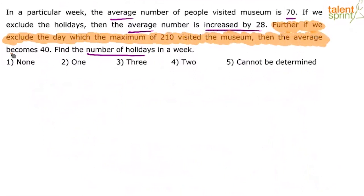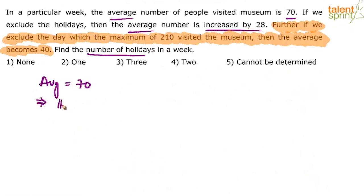There will be two holidays in that week. Let's look at the solution. The average number of people is 70, meaning the total number of people will be 70 × 7, because there are 7 days in a week. So, the total number of people is 490.